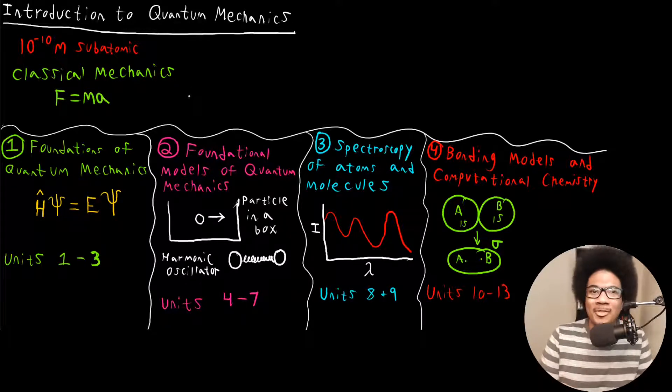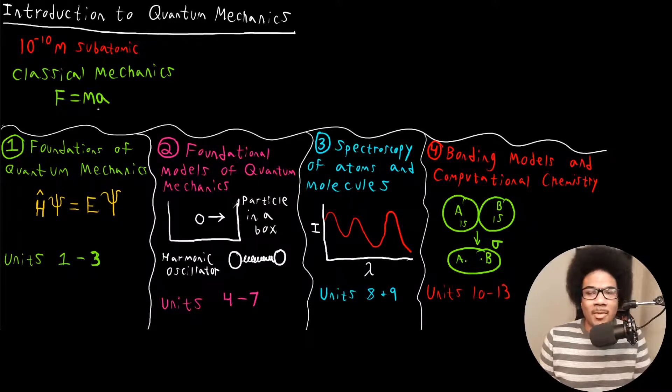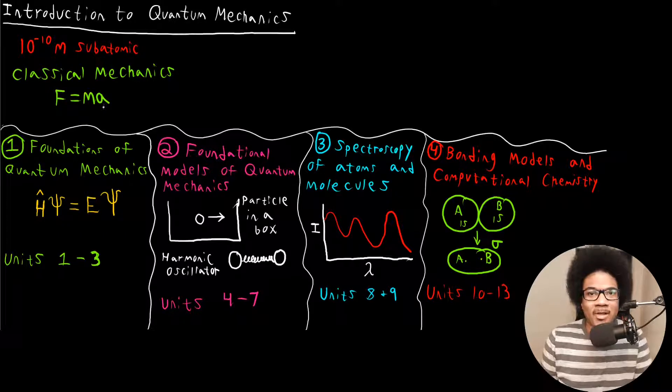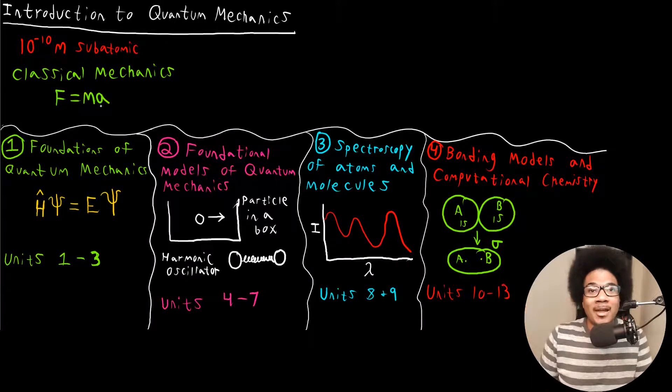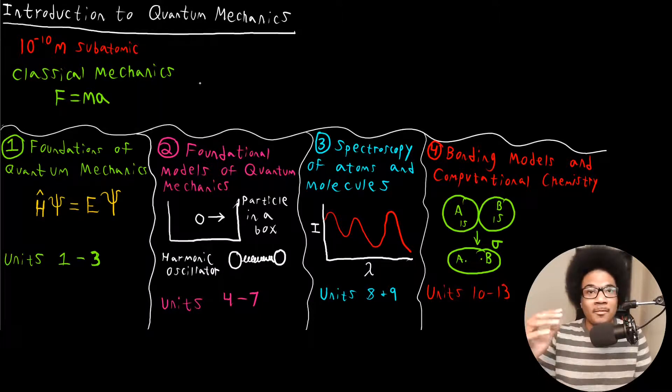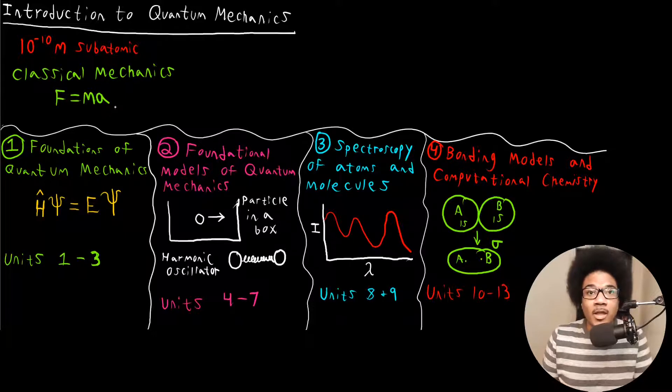Whether you knew it or not, everything you were doing in classical mechanics could be boiled down to F equals MA. Force is equal to mass times acceleration. In that class, you probably would draw what's known as a free body diagram, label out the different forces acting on an object, and try to predict its motion using this equation.